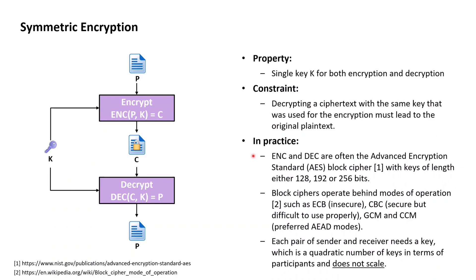With AES, the symmetric keys used can be of length 128 bits, 192 bits, or 256 bits. As AES is a block cipher that by itself only encrypts 128-bit blocks, AES needs to operate behind a block cipher mode of operation in order to make it practically usable and to allow for an unlimited amount of data to be encrypted.